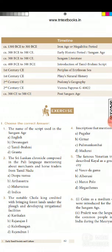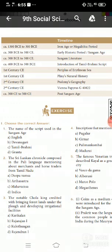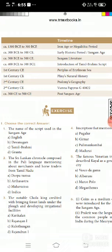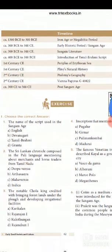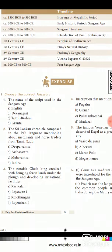The next period is 300 BCE to 300 CE. CE means Common Era. This period is called the early historic period, also known as the Sangham Age. The next entry is Sangham literature, from 400 BCE to 300 BCE, followed by the introduction of the Tamil Brahmi script.